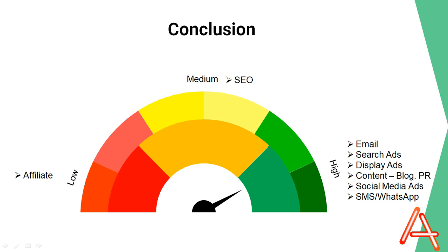The third channel that a company should prioritize is blogging. Blogging allows you to create valuable content that your audience will find useful and engaging, and can also help improve your search engine rankings and drive traffic to your website. The fourth channel to prioritize is press releases, which allow you to communicate with journalists and media outlets and get your company's news and announcements in front of a wider audience.